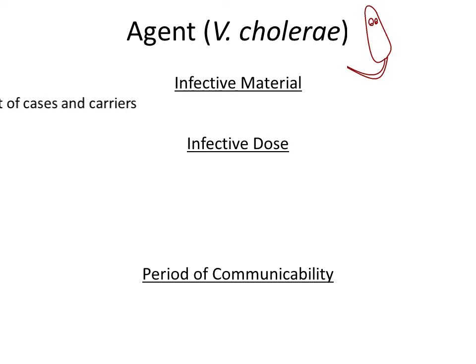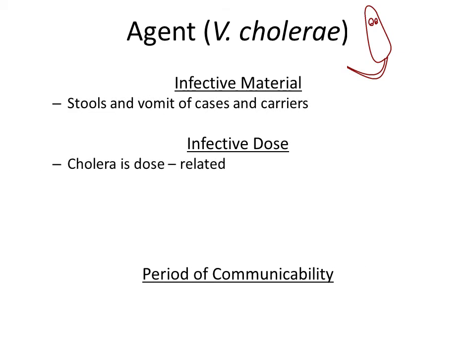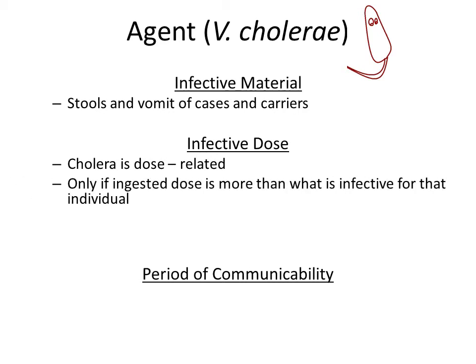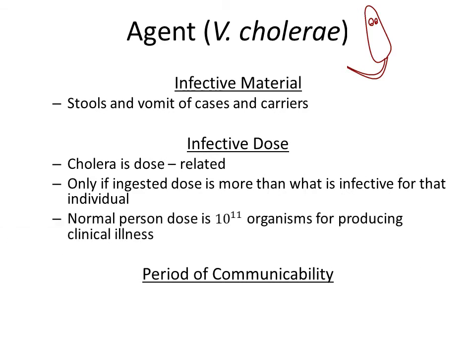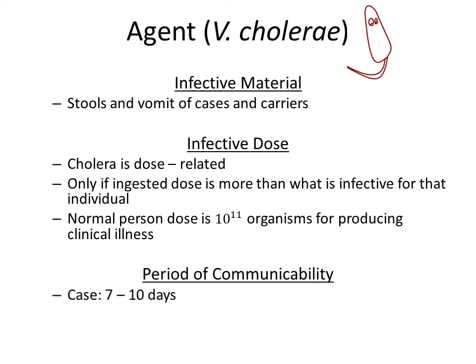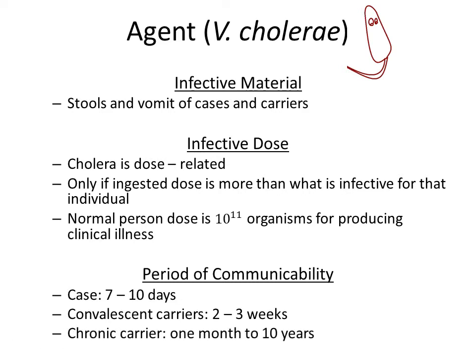The source of infection is the stool and vomit of cases or carriers. Cholera is dose-related; only if the ingested dose exceeds the infective dose for that individual will infection and disease result. A normal person's infective dose is 10 to the power of 11 organisms for producing clinical illness. The period of communicability for a case is 7 to 10 days, for convalescent carriers 2 to 3 weeks, and for chronic carriers it can range from 1 month to 10 years.